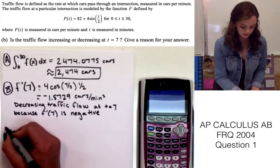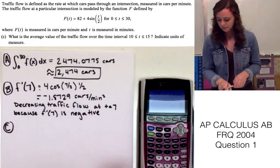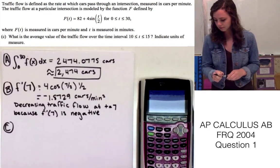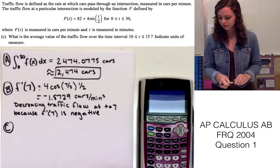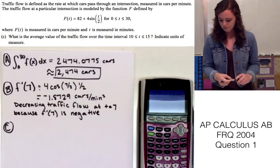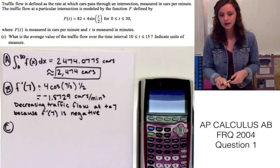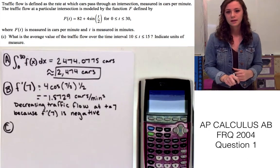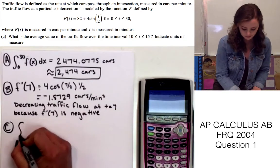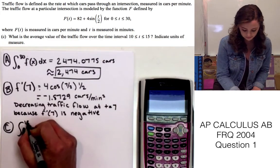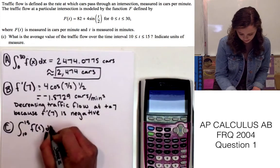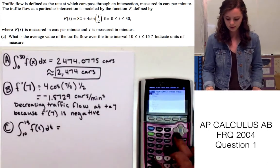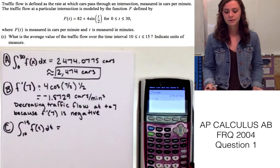Okay, so now to part C. Part C is asking what is the average value of the traffic flow over the time interval 10 ≤ t ≤ 15, and we need to indicate units of measure. So since it's asking for the average value of traffic flow, we're going to take the integral of f(t) between 10 and 15, and we can just plug that into the calculator since we already put in f(x) for y1.